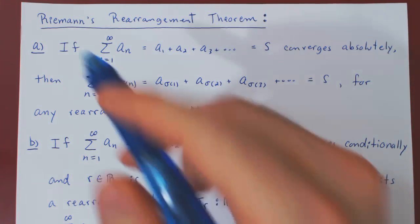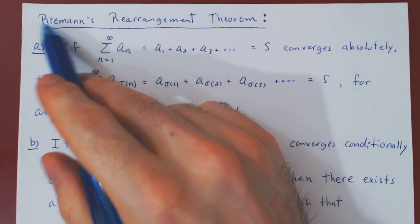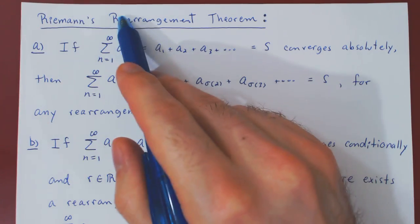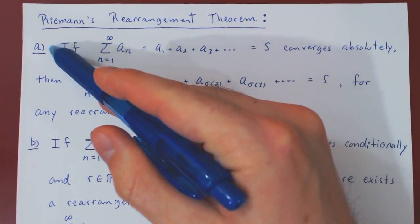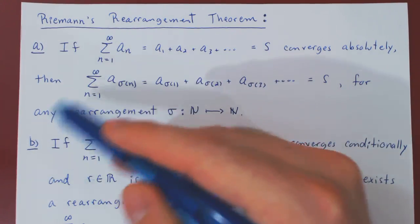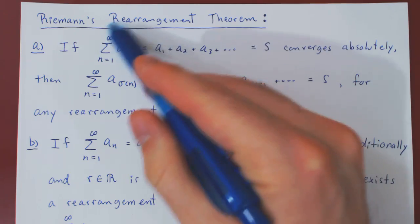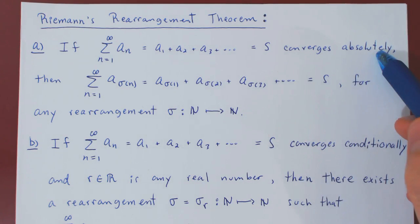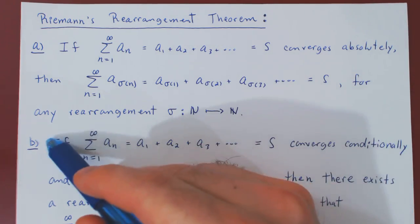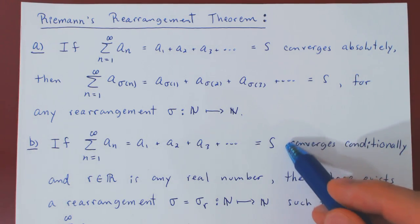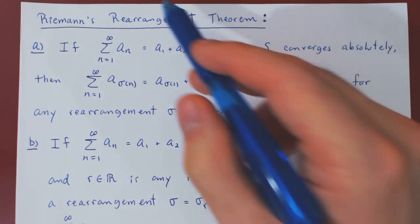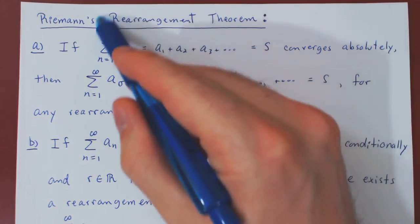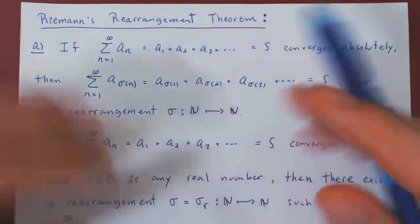In this video, we will look at Riemann's Rearrangement Theorem. There are two parts: Part A, when the series converges absolutely, and Part B, when the series converges conditionally. The result is about rearrangements of series.